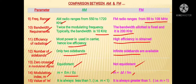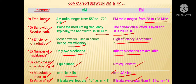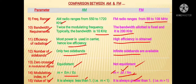Next is about the exact value of modulation index. In AM it is always less than 1, and in case of FM it is always greater than 1. For FM, the modulation index is given as ΔF upon Fm, where ΔF is fixed at 75 kHz, and Fm is the modulating frequency, which is normally 10 to 20 kHz. So this ratio is always greater than 1.